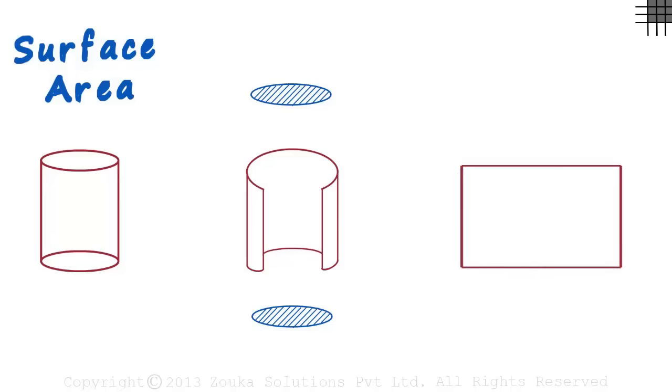If you look carefully, you will notice that the length of this rectangle is actually the circumference of the circular base, because all we did was pull this open. What about its breadth? Its breadth is the height of the cylinder.